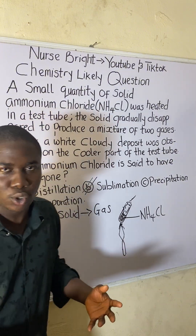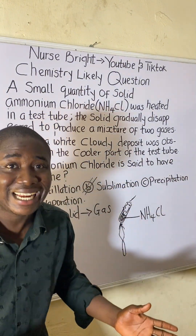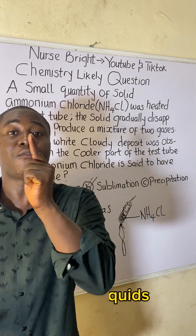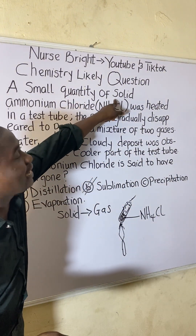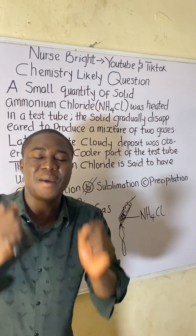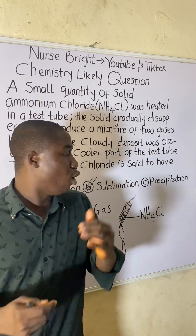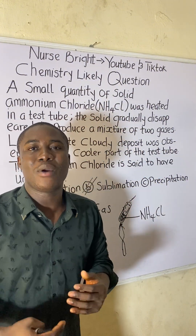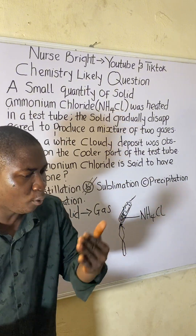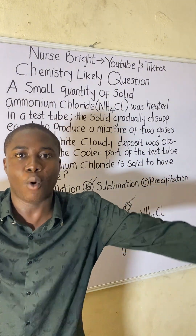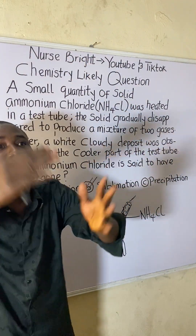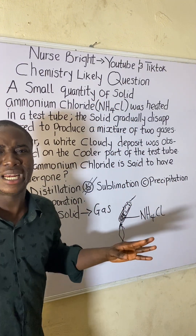Let's analyze the other options. Option A is distillation. Did ammonium chloride undergo distillation? No, because distillation works on the principle of separation of liquids based on their boiling points. We have fractional distillation, simple distillation, and other types - but ammonium chloride was a solid, not a liquid, so it can never be distillation.